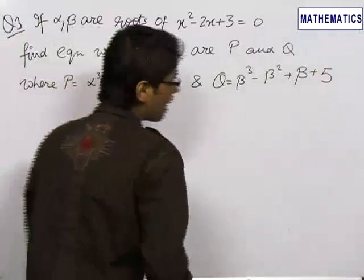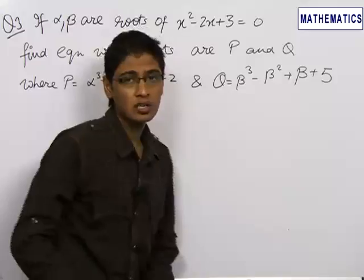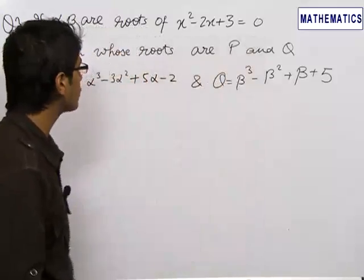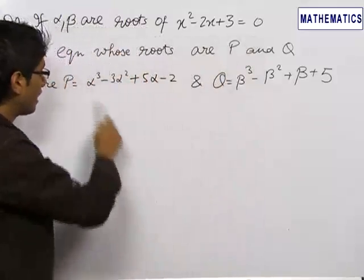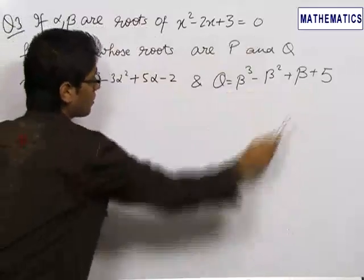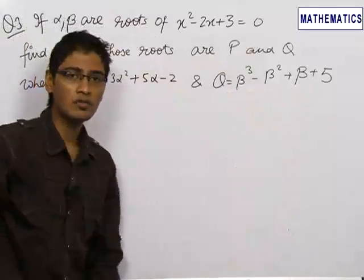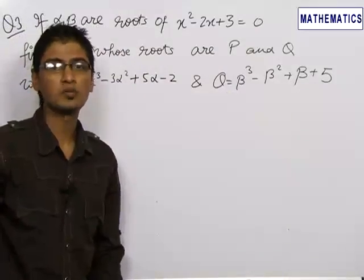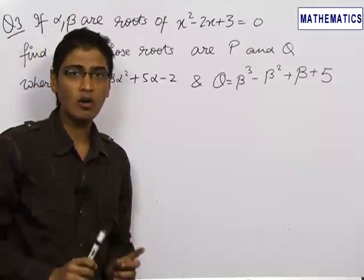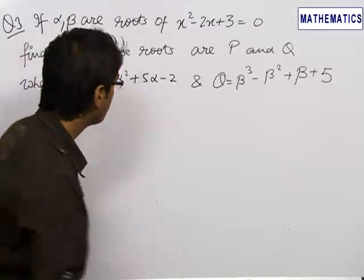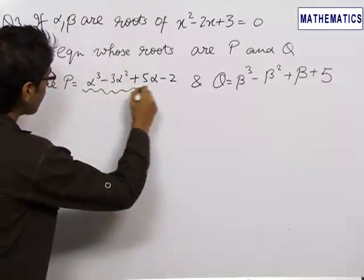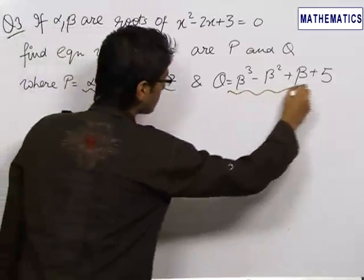A foolish and longer method to do this question would be to find both roots alpha and beta of the quadratic equation, substitute into the expressions to get p and q, then find the sum and product of the roots to form the quadratic equation. But this is a very long method and should not be applied. Instead, we try to reduce these longer expressions into simpler terms.